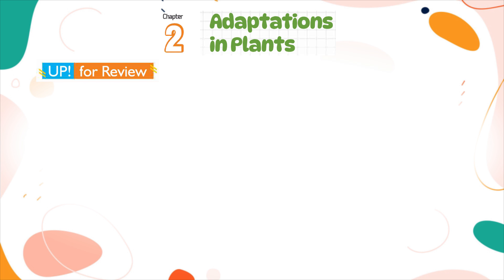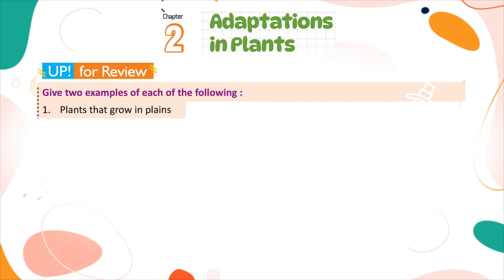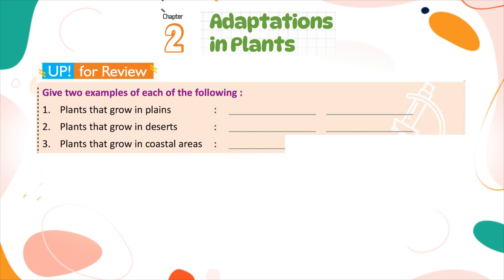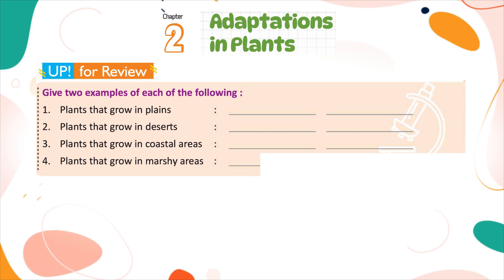Up for Review. Give two examples of each of the following: 1. Plants that grow in plains. 2. Plants that grow in deserts. 3. Plants that grow in coastal areas. 4. Plants that grow in marshy areas.